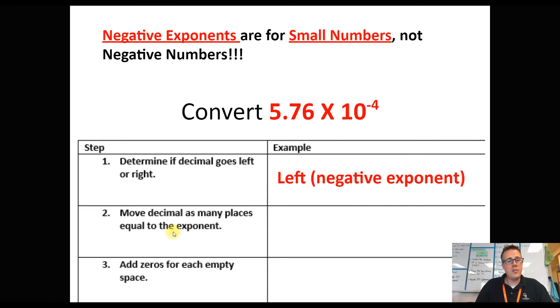Step 2, how many places should we move it? Well, that's what the exponent tells us. We're going to move it 4 spots in the smaller direction. So we're going to move it 1 spot over. And then we have 3 to go. That just means we're going to plop 3 zeros in there. So 4 places total. Now we just add zeros to each empty space. And we'll have 0.000576. Pause this video if you need to record any notes.